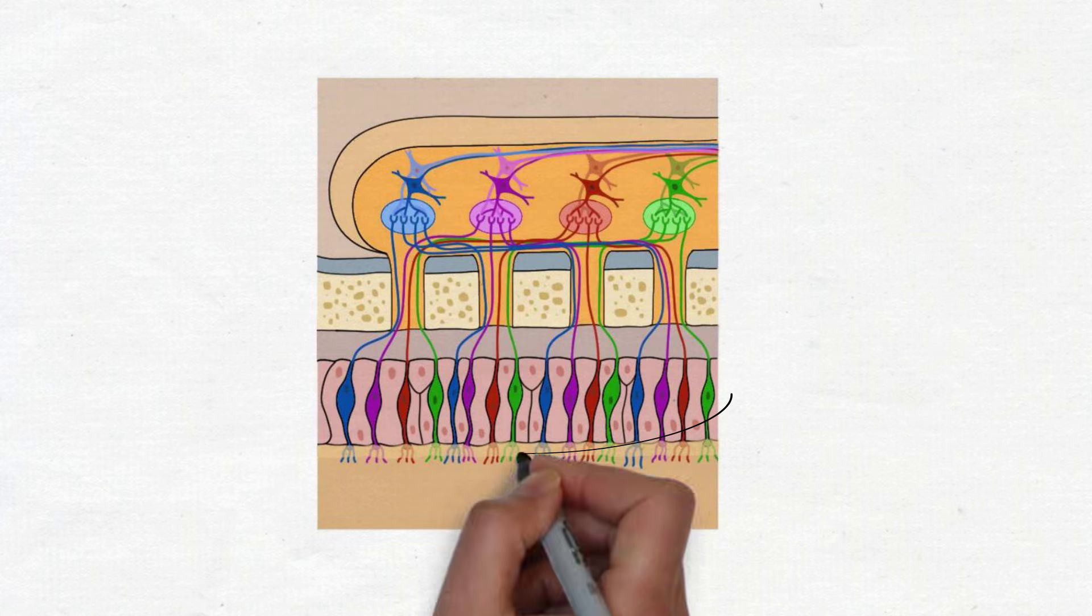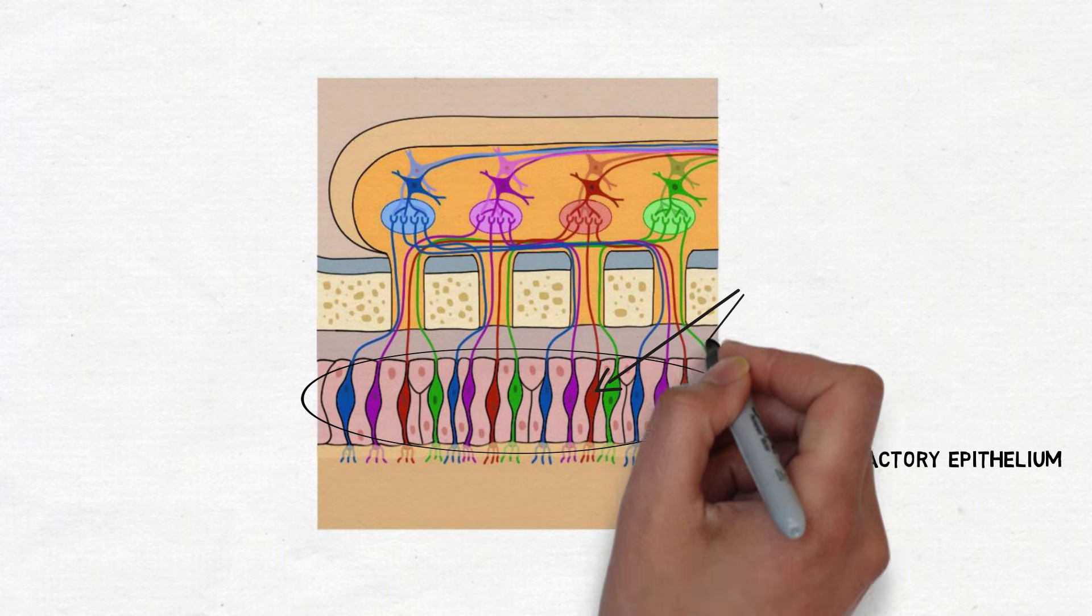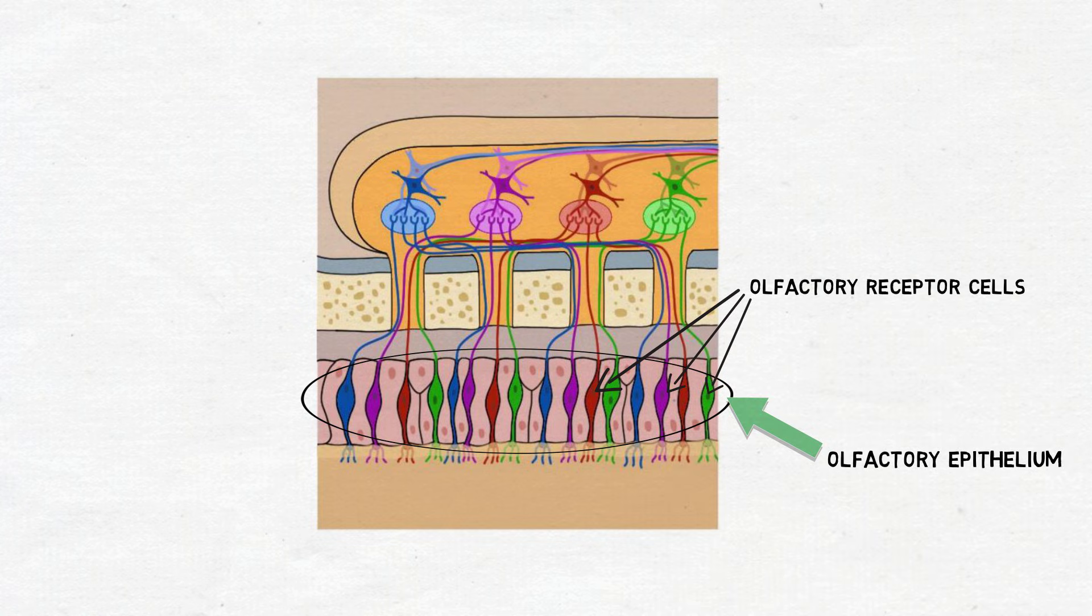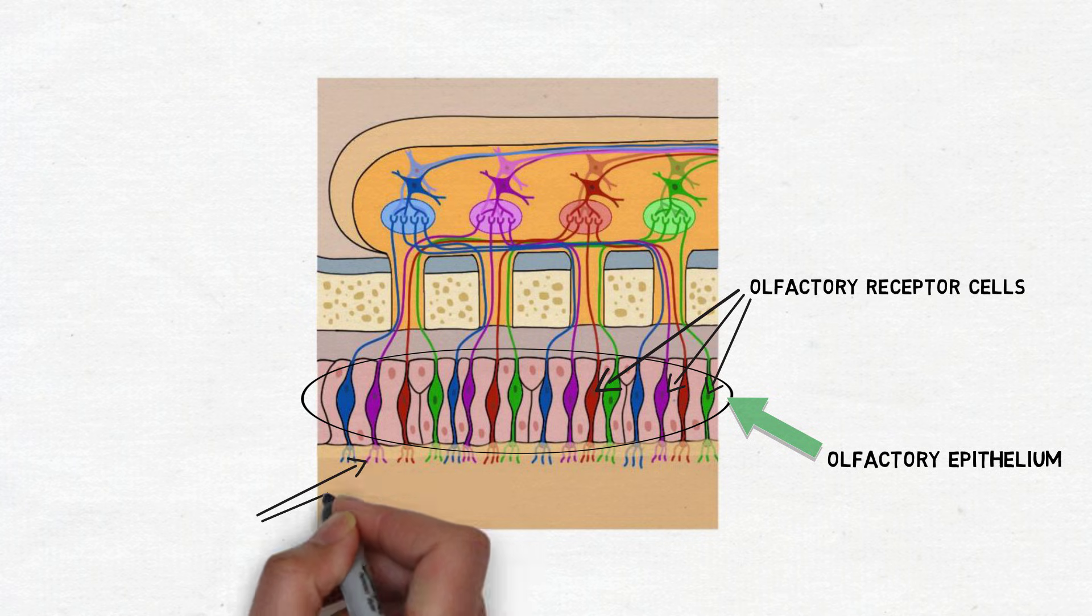The olfactory epithelium contains millions of olfactory receptor cells. These cells have a single dendrite that extends to the outermost layer of the epithelium, where cilia emerge from the end of the dendrite and spread over the surface of the olfactory epithelium.